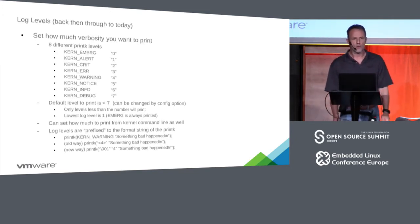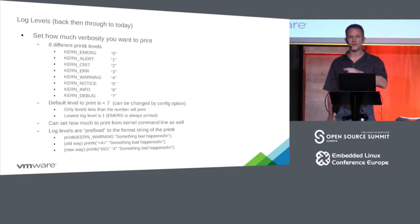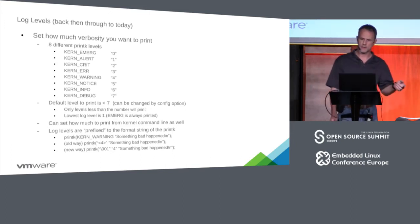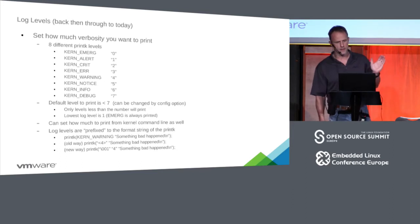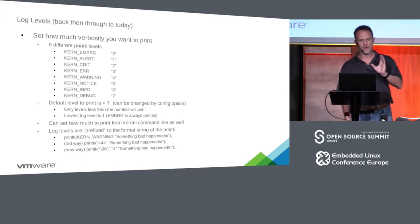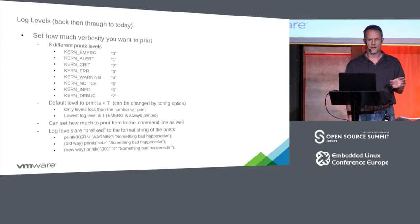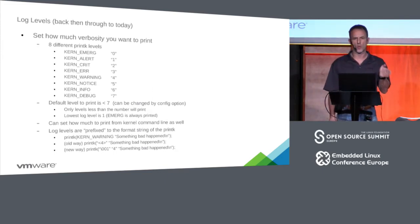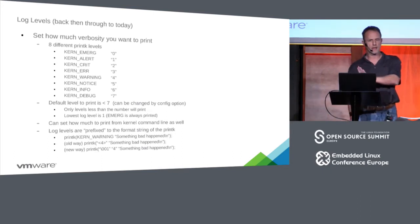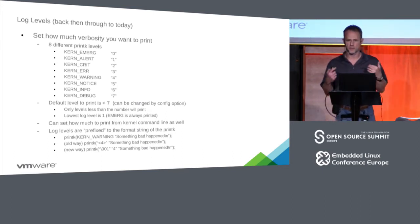The log levels go from zero to seven, and they're the same from back then to today. The lower the number, the more likely it will print. KERN_EMERG will always print — there's code to make sure the console log level is never less than one. So the range is effectively one to eight: if you put in eight, that means print everything; if you put in one, it means just print when the system basically crashes.